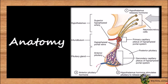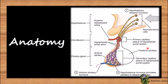Anatomically, the pituitary gland is formed of two parts. First is anterior pituitary, i.e. adenohypophysis, and posterior pituitary, i.e. neurohypophysis. Adenohypophysis developed as an outgrowth of the pharynx called Rathke's pouch and is formed of three parts: pars distalis, pars intermedia, and pars tuberalis. The pars distalis and pars tuberalis together are known as the anterior lobe of the pituitary. Neurohypophysis developed as a downgrowth of the hypothalamus and forms pars nervosa, which forms the posterior lobe of the pituitary.